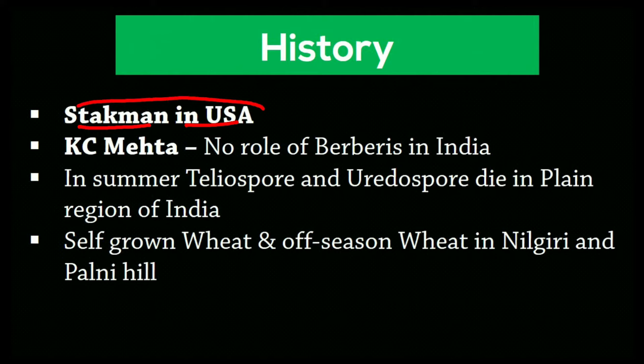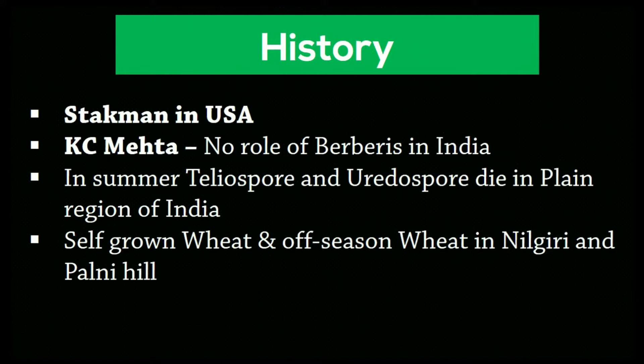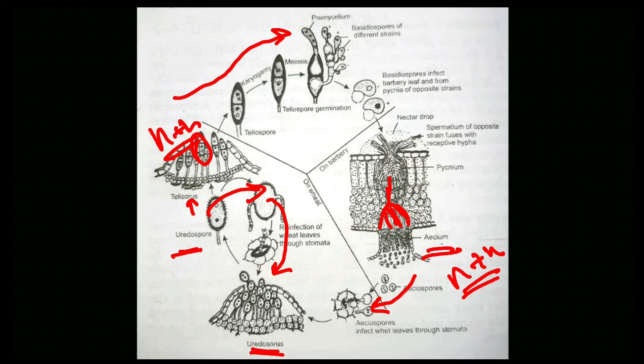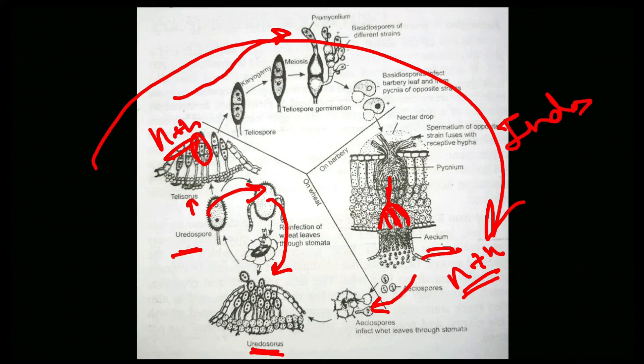Dr. K.C. Mehta stated that barberry has no role in India. In summer, teliospores and uredospores die in the plains of India. Self-grown wheat and off-season wheat in Nilgiri and Palani Hills play an important role in survival of uredospores.